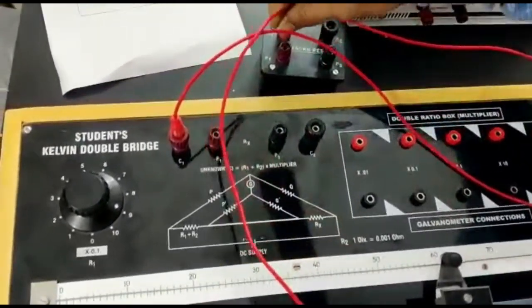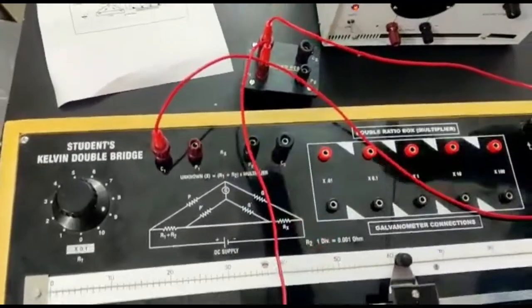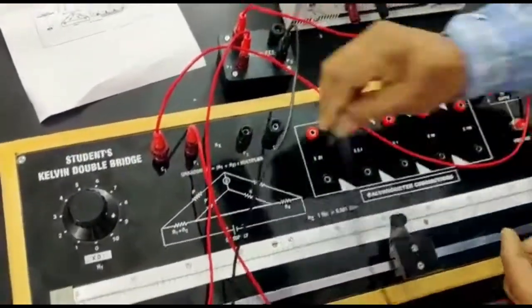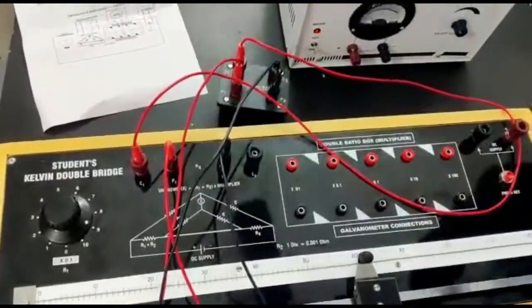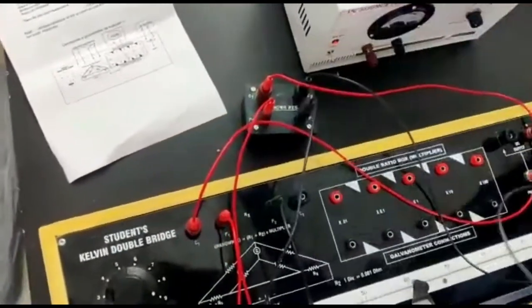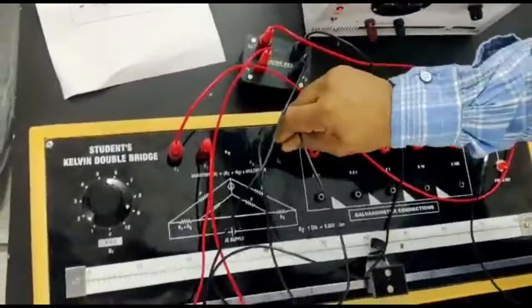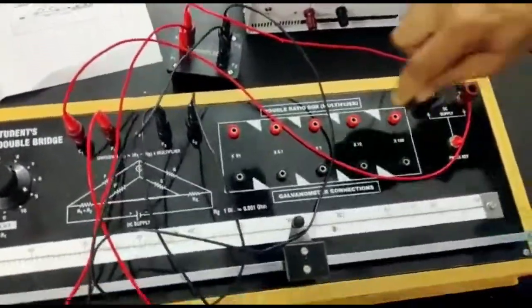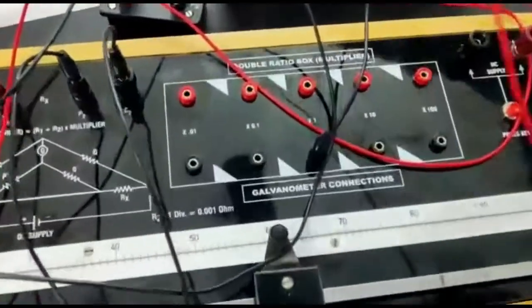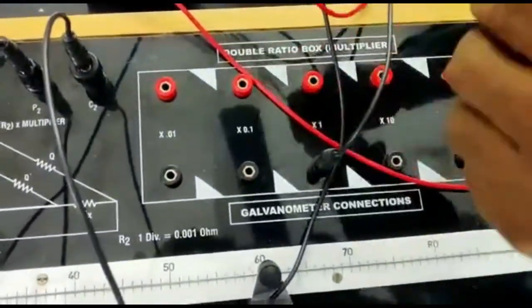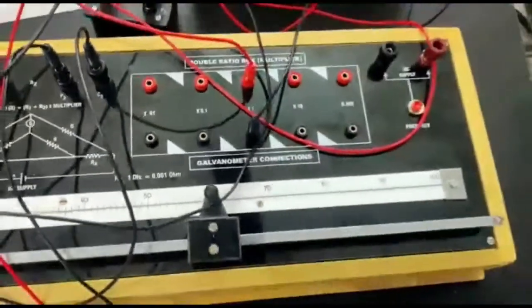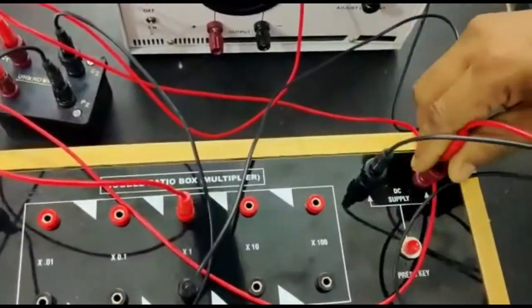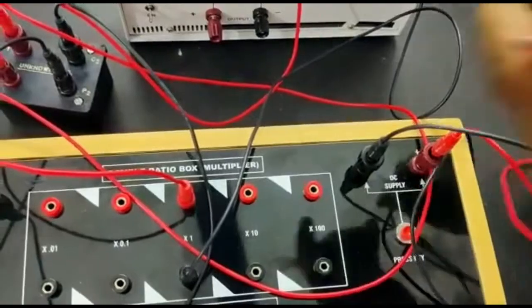Taking care of polarities, connect the galvanometer at one multiplier and the DC source at the terminals.